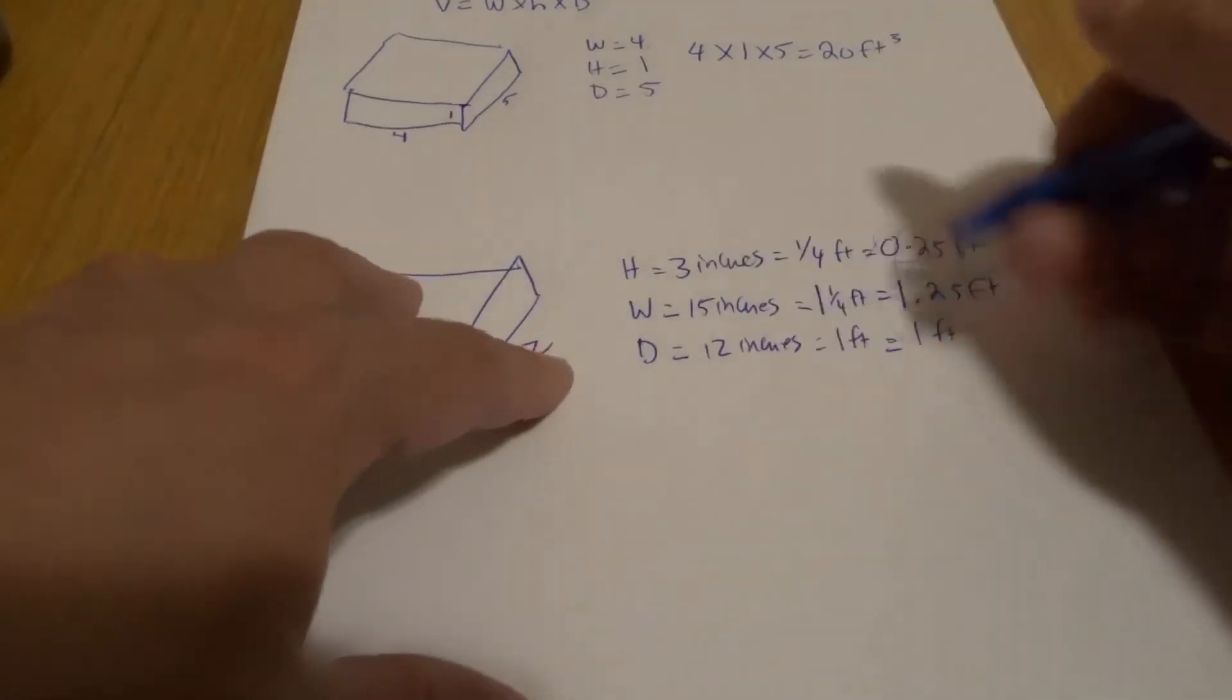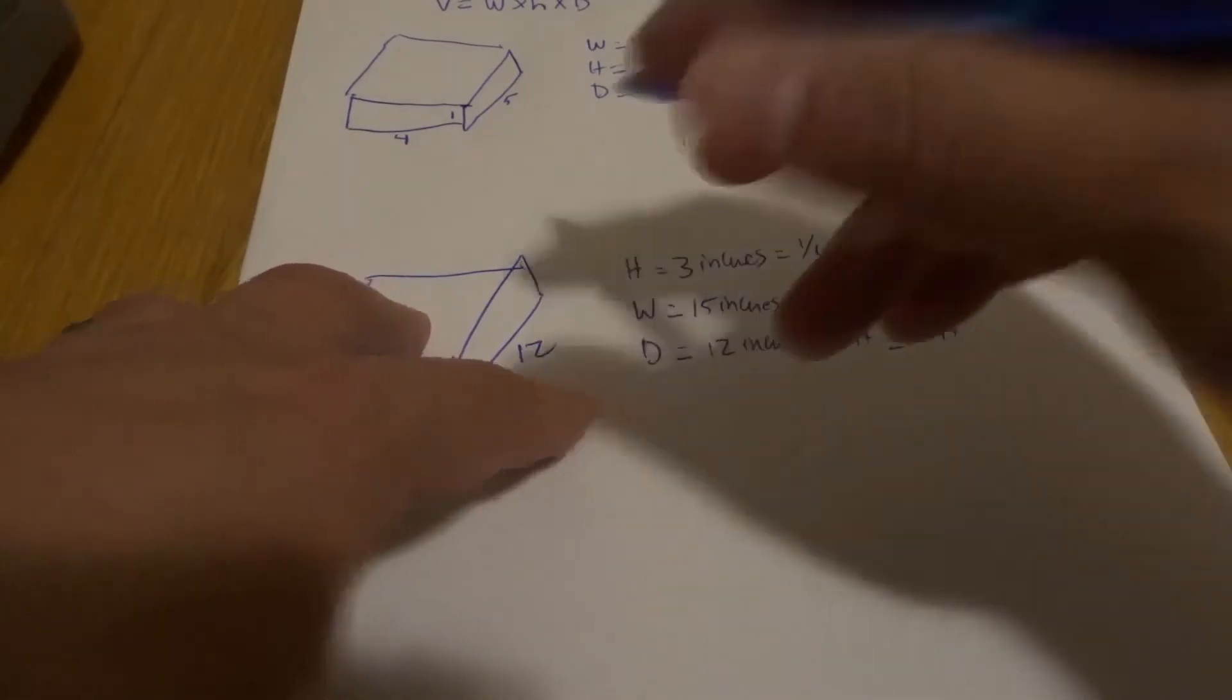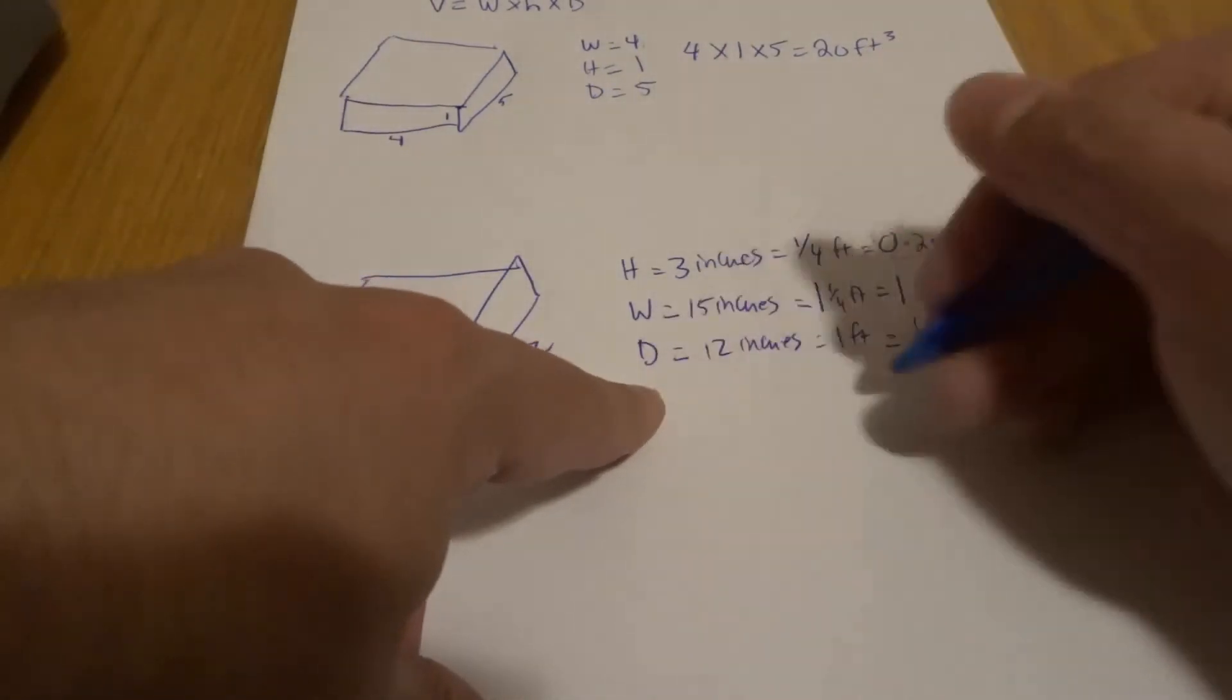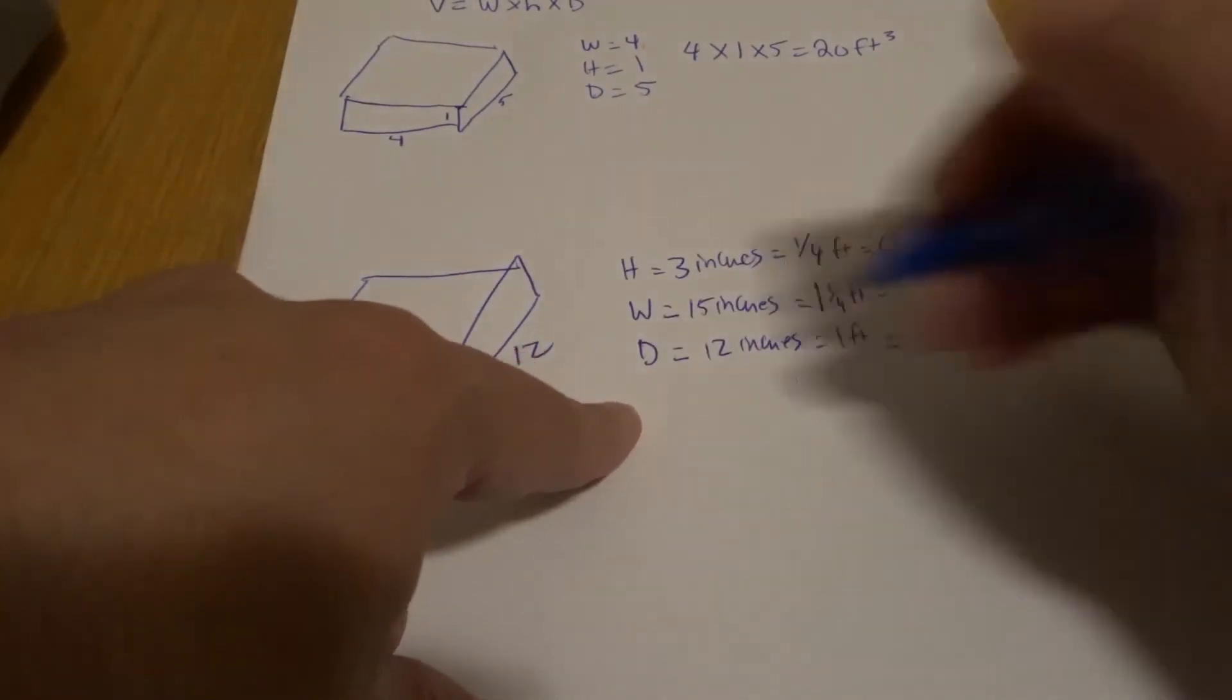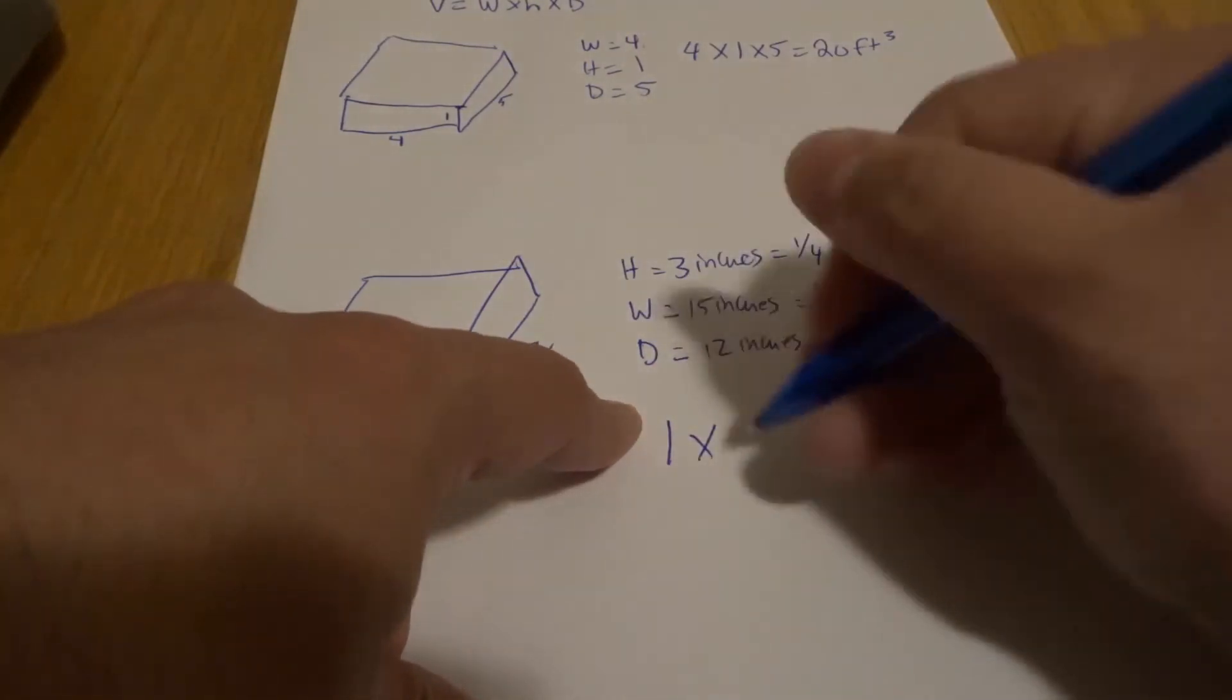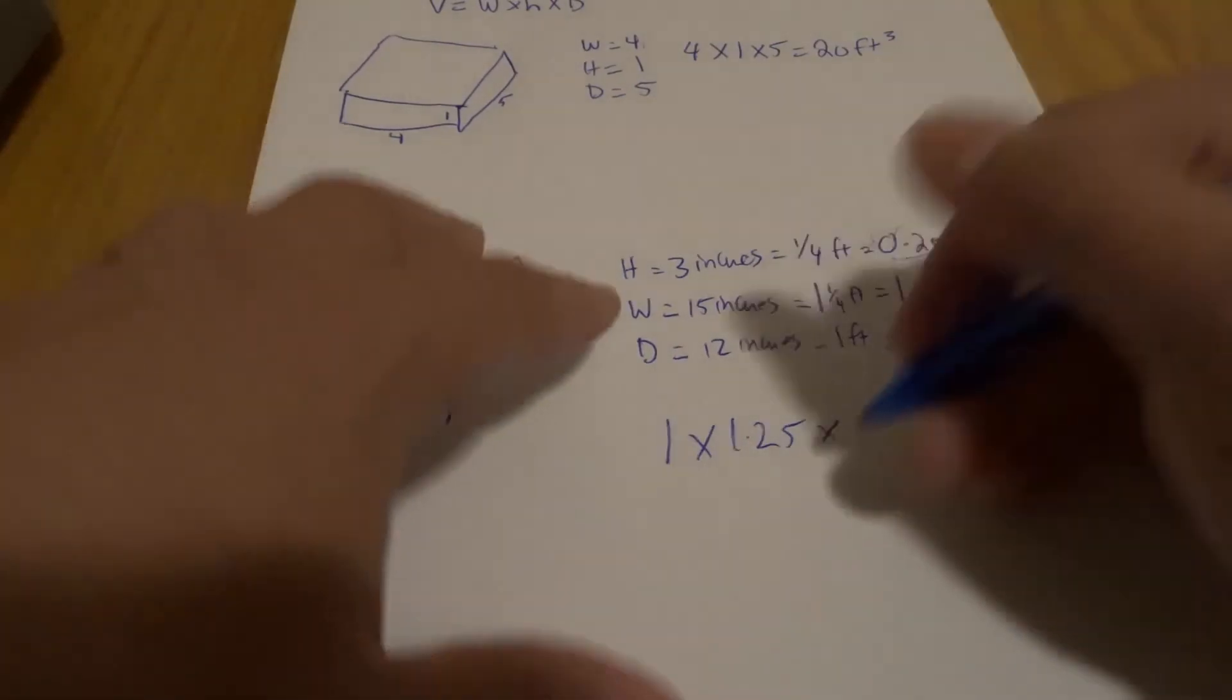So now I want to multiply all three of these numbers. We're going to take these three numbers - I have them written down over here on the side. I already did the calculation on a separate sheet of paper off camera. So it might be in a different order, but we're going to take this one right here: one times 1.25 times 0.25.